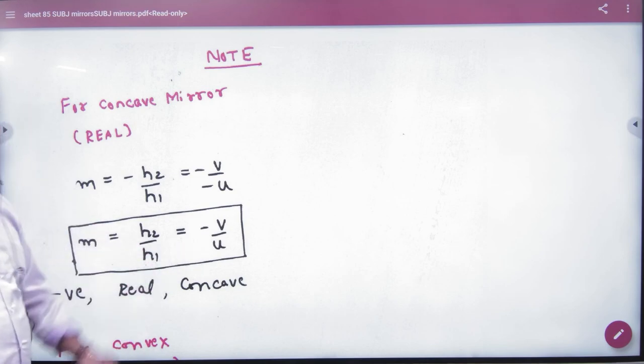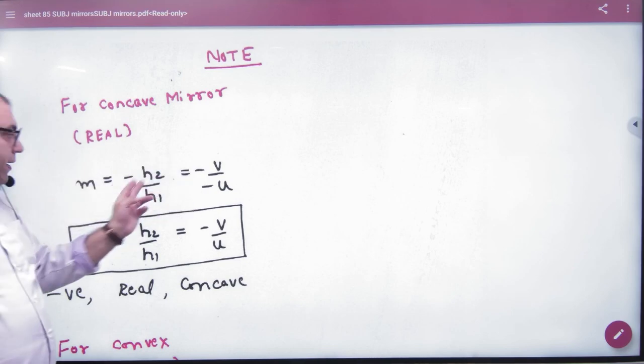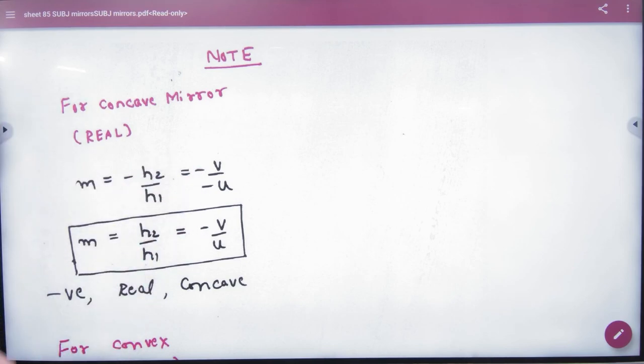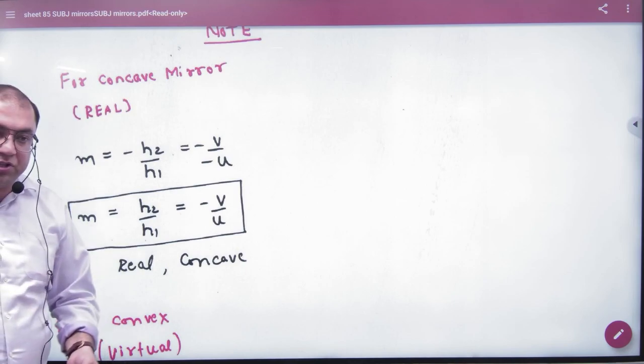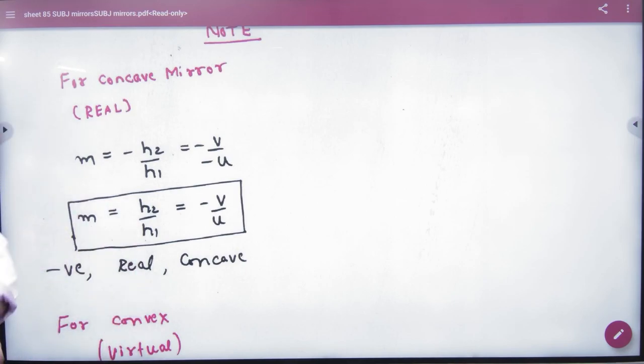So this is the magnification. The magnification is now a formula - the plus and minus sign went right. So magnification for real images, because they are becoming inverted - magnification for real image means negative. For real and for concave.